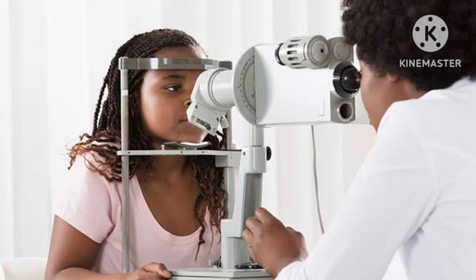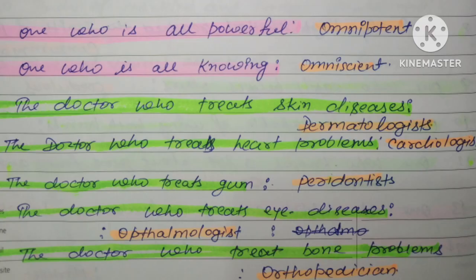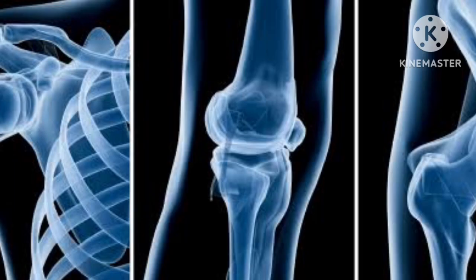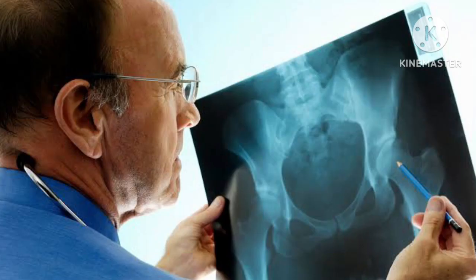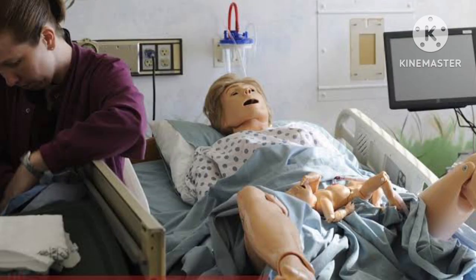After ophthalmologist and dermatologist, we have orthopedician. The root 'ortho' is used for bone, so wherever we see 'ortho', we understand it relates to bones. An orthopedician is a doctor who treats bone problems and diseases. After orthopedician, we have obstetrician — a doctor who attends child delivery. The doctors who handle childbirth are known as obstetricians.